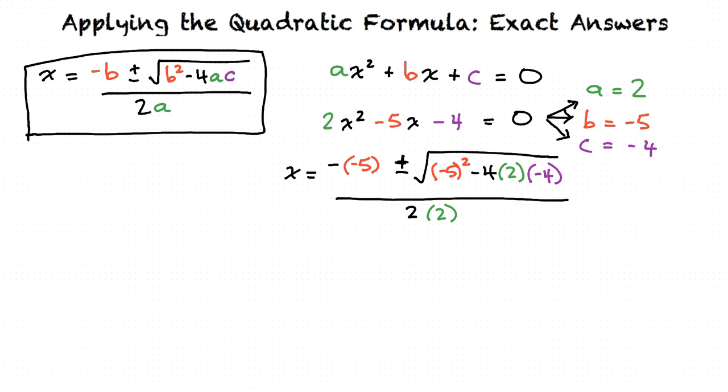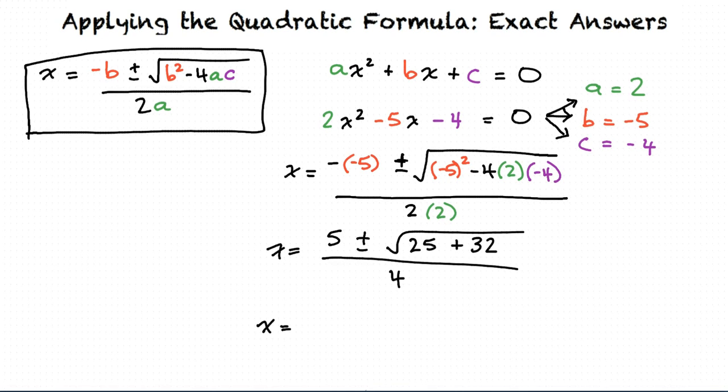Negative negative 5 simplifies to positive 5, and then we have 25 plus 32 inside the radical, which becomes 57, and then we have 4 on the bottom. So x equals 5 plus or minus the square root of 57 all over 4.